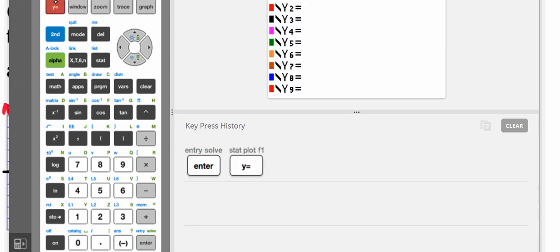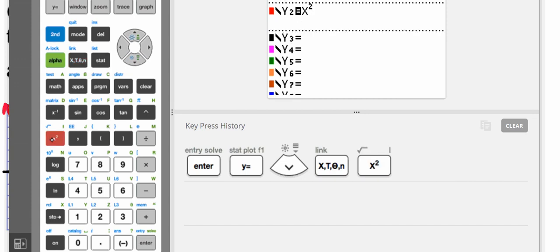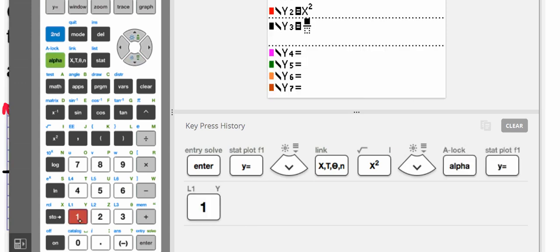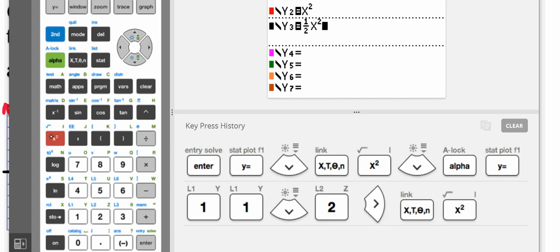So we're going to go to the y equals, and we're going to go ahead and we're going to type in x squared for our parent function. Then, we're going to go ahead and we're going to put in our new function. So we're going to go ahead and put in our fraction, 1 half x squared. Now think about what that might do. How might that look? Let's graph it and see.